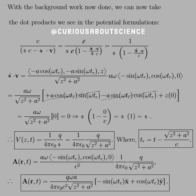We must evaluate everything at the proper retarded time t_R equal to t minus script R over c, where script R equals the square root of z squared plus A squared over c. We need this for the vector potential A, which equals velocity over c squared times the scalar potential. With t_R defined, we can write out the full vector potential by plugging in the velocity evaluated at t_R. You could fold c squared into mu naught and epsilon naught and cancel epsilon naught out, but for clarity the result is kept together. When dealing with moving charges, always reference the retarded time t_R.